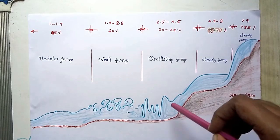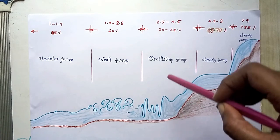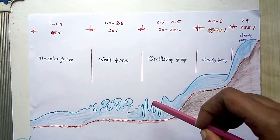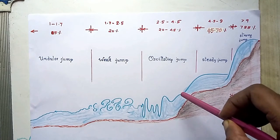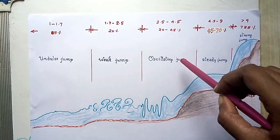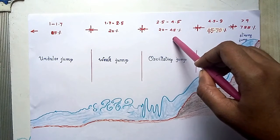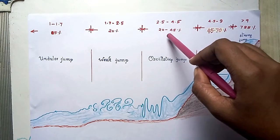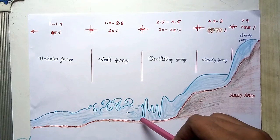In the next section when it reaches the downstream basin, the entering jump oscillates back and forth from the bottom to the surface and back again without any periodicity. The jump is thus called an oscillating jump. The energy dissipation in this region ranges from 20 to 45%, and Froude number ranges from 2.5 to 4.5.